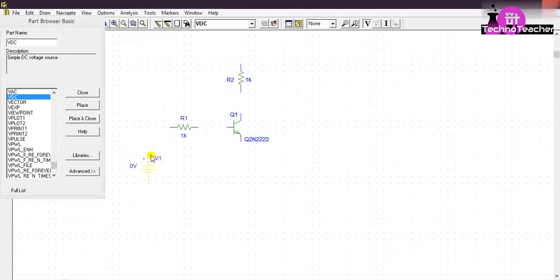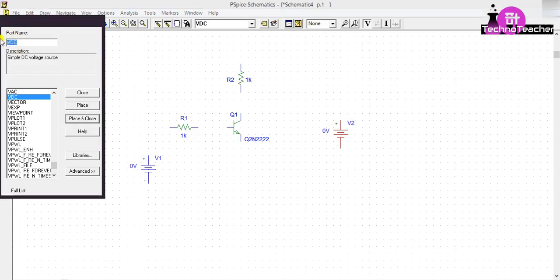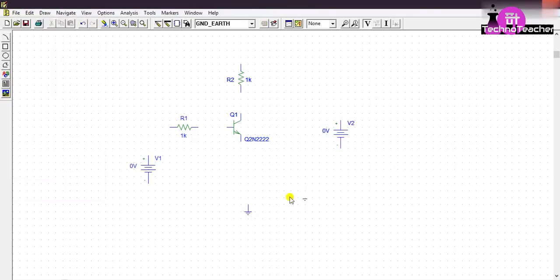Place it here and here and right click. Then we need ground. Select ground earth, then place and close, place it then right click. Now we need to join this with wires. To join that, click on draw wires.